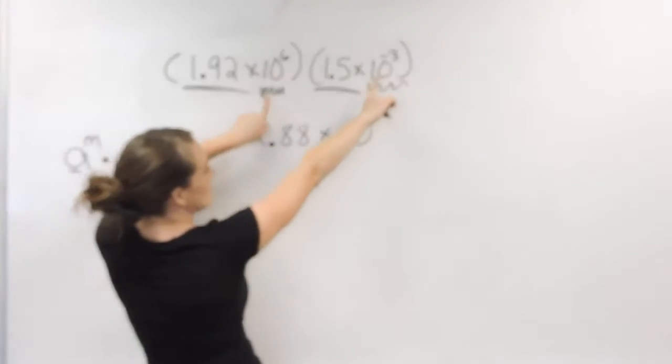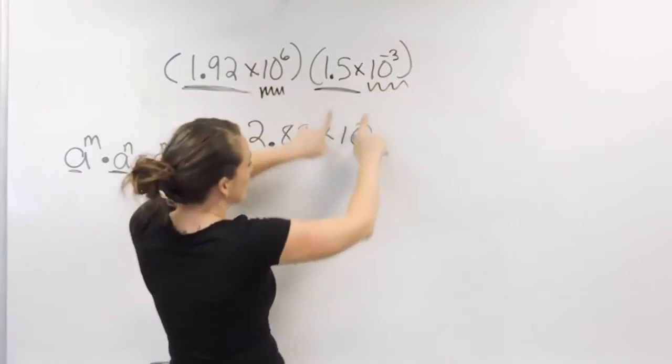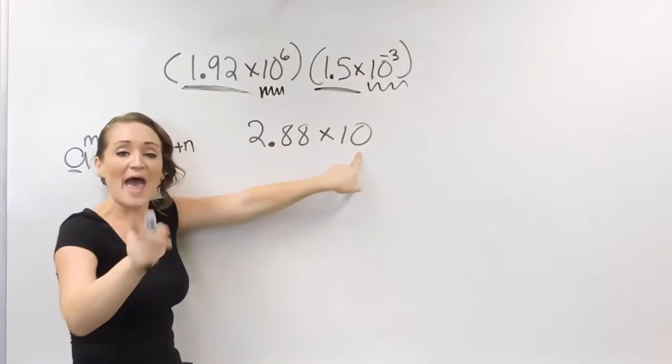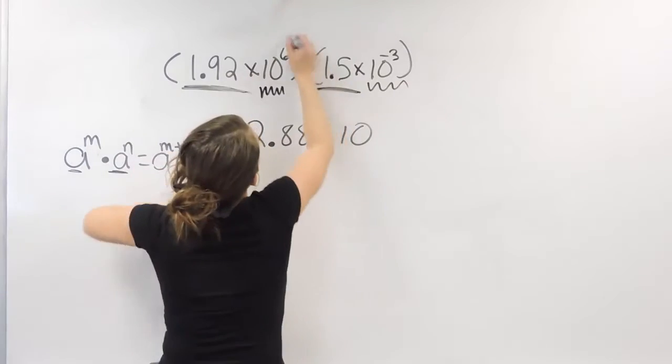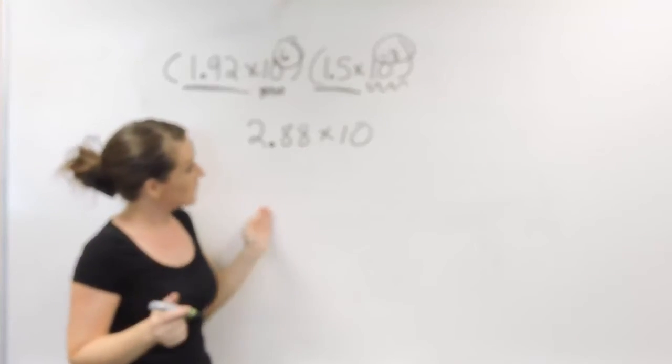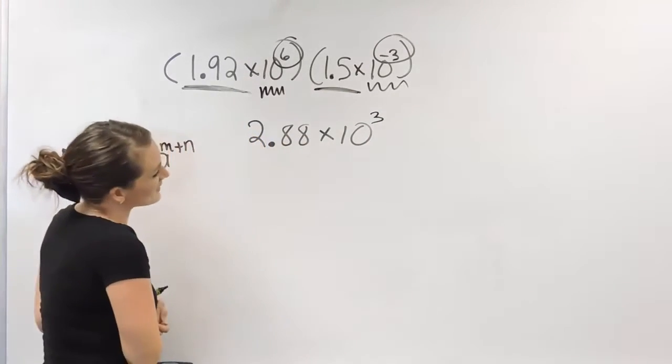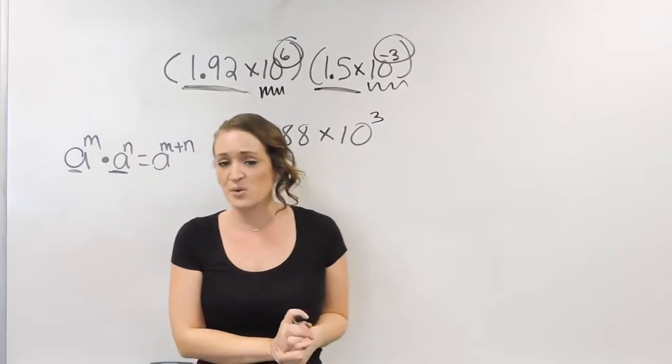So in order to do the multiplication over here using the product rule, we keep our 10, we add our exponents. 6 plus negative 3. 6 plus negative 3 is a positive 3. All right, so 2.88 times 10 to the third power.